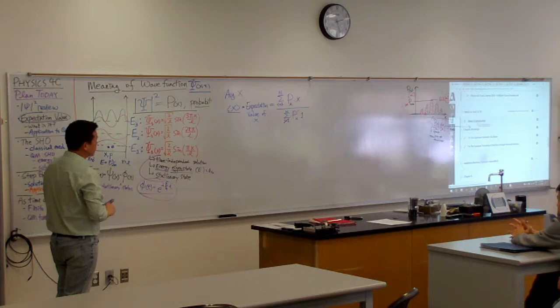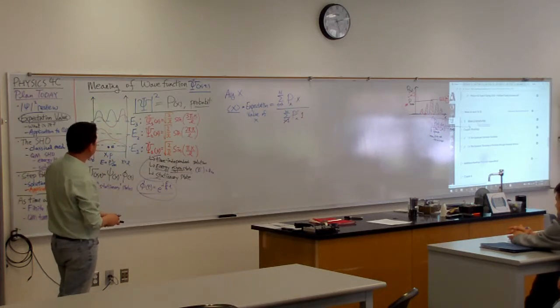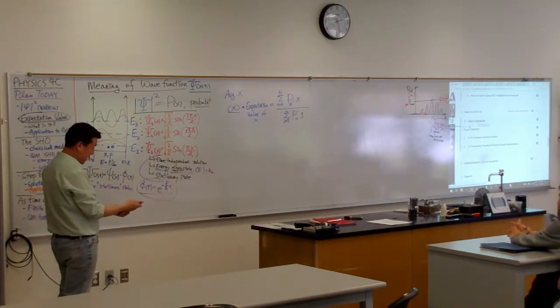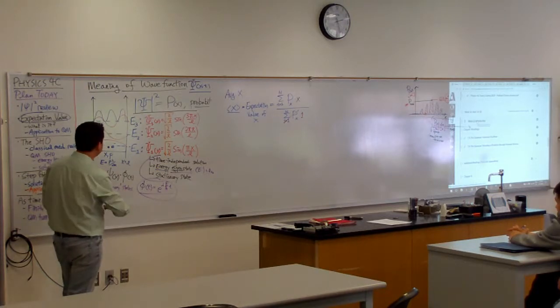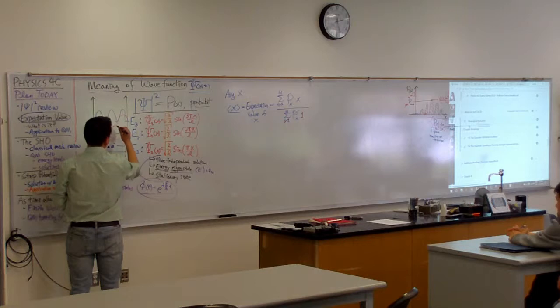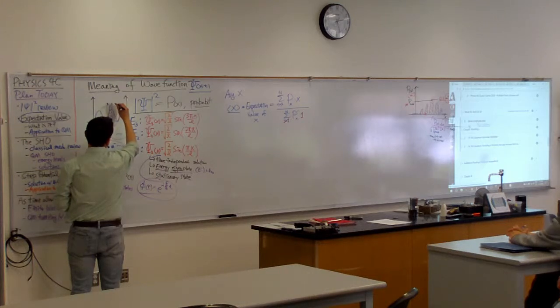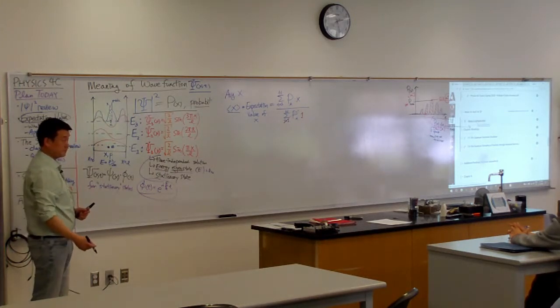And when we say probability being found at some location x, what we really mean is not being exactly at that location x, but x plus dx. So this is x, this is x plus dx.